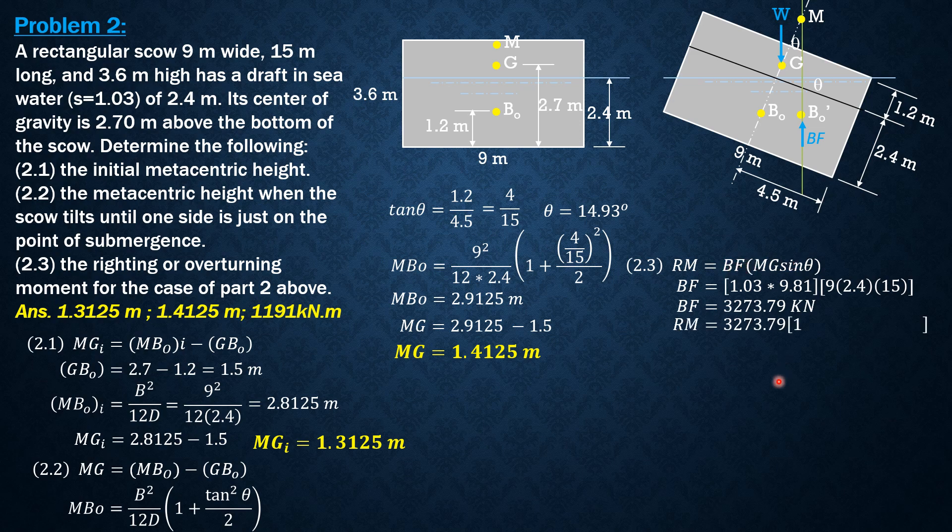Finally, substitute into this expression for righting moment: 3,273.79 × 1.4125 × sin(14.93°). So the righting moment is 1,190.38 kN·m, or to four significant figures, 1,191 kN·m. That's it for this problem, and I hope you were able to follow the solution.